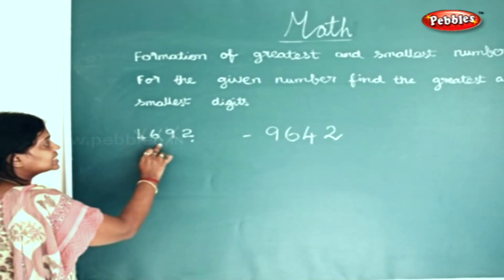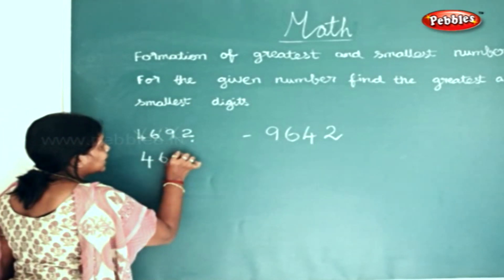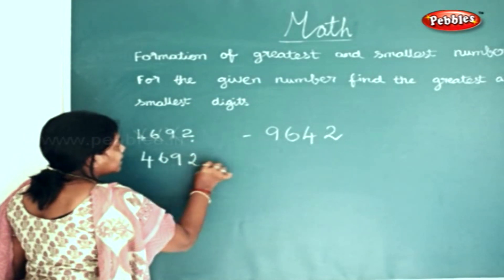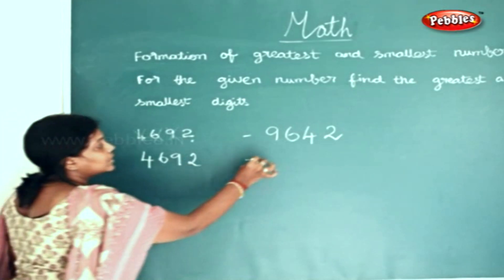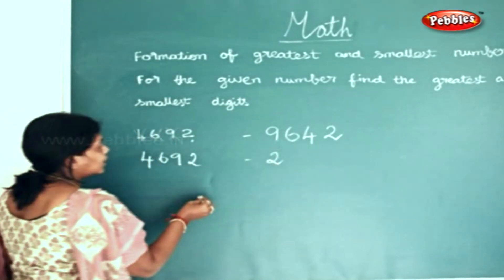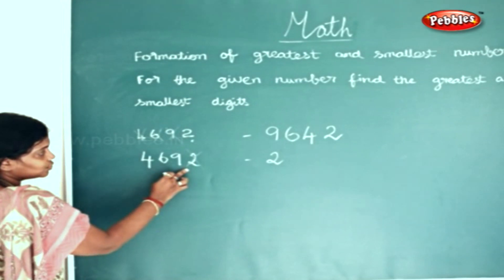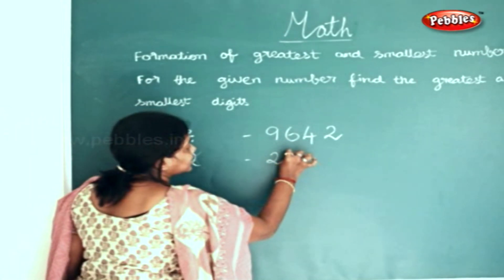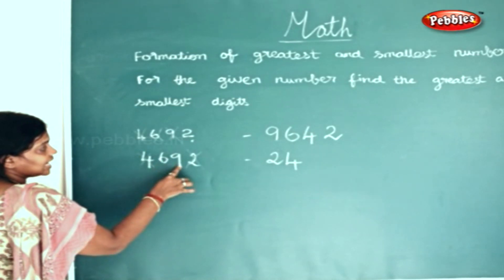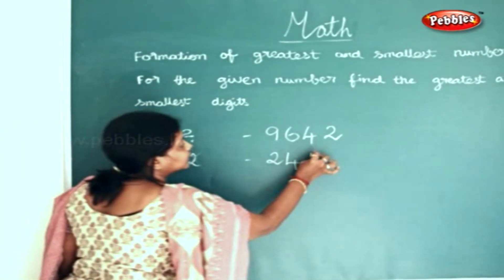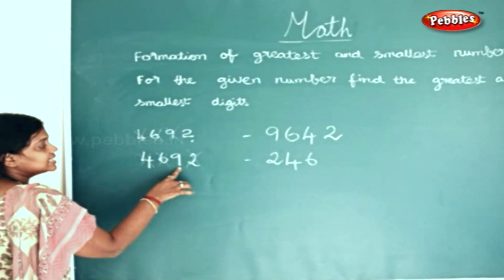Now we will see the smallest number that can be formed out of four, six, nine, two. I'll write four, six, nine, two again. Which is the smallest number? Two is the smallest, so I'm cutting out the two. The next smallest number is four, so I'll write four and strike it out. Among six and nine, six is smaller than nine.